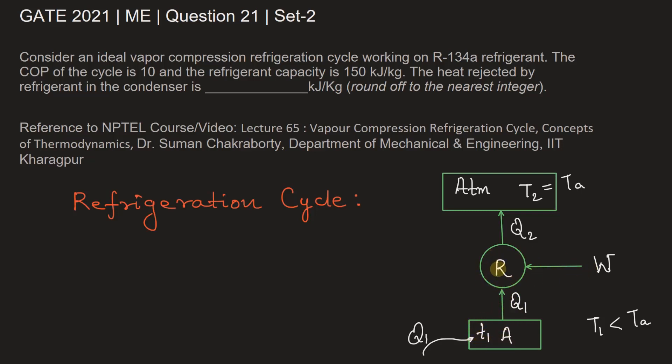So COP is defined as Q1 by W. It is given as 10, so the coefficient of performance is 10. Now we know that Q1 is the heat capacity also.